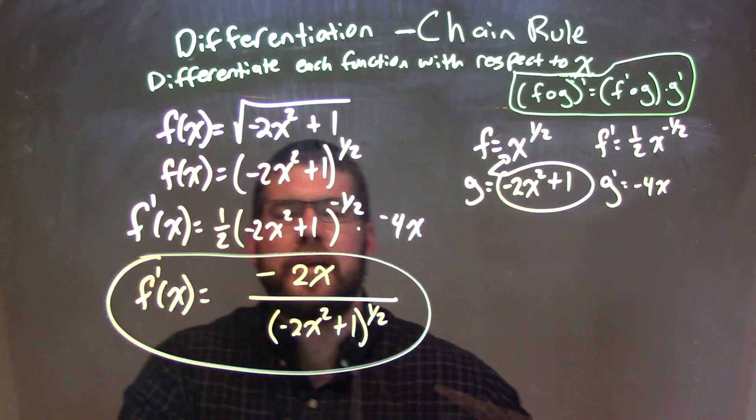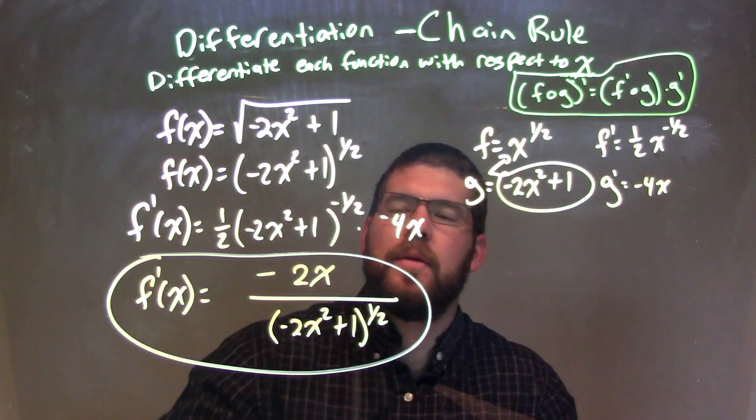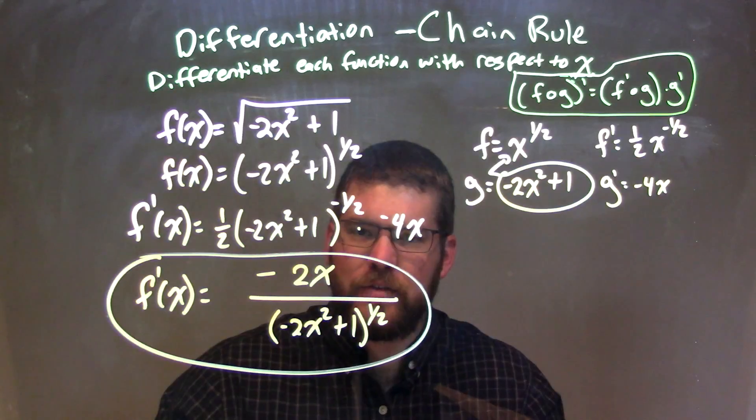f prime of x is equal to negative 2x over parentheses negative 2x squared plus 1 close parentheses to the 1 half power. It's a positive 1 half power.